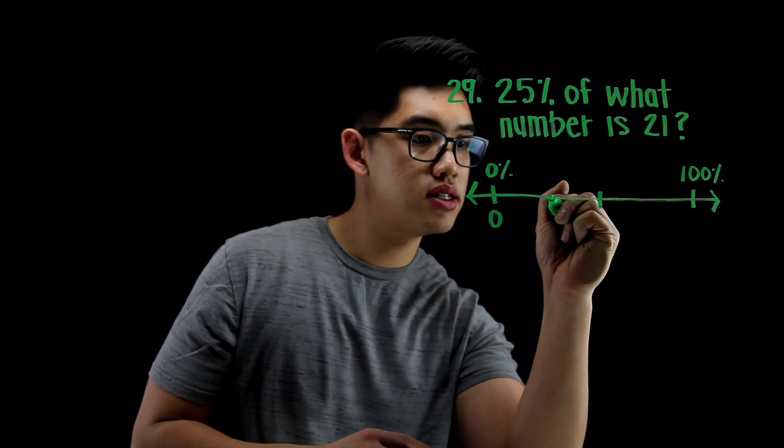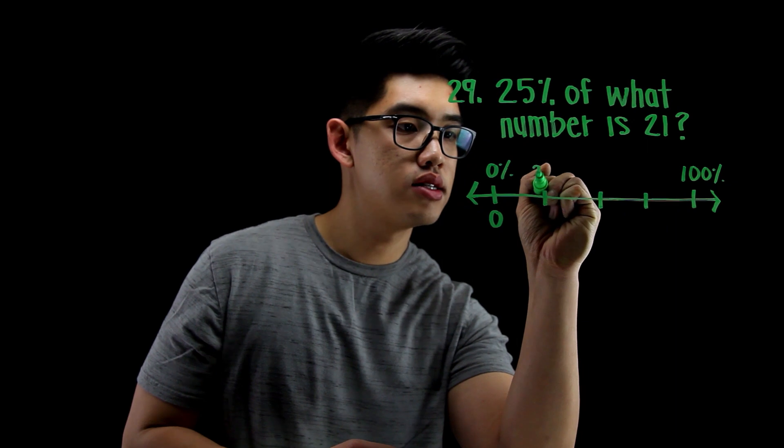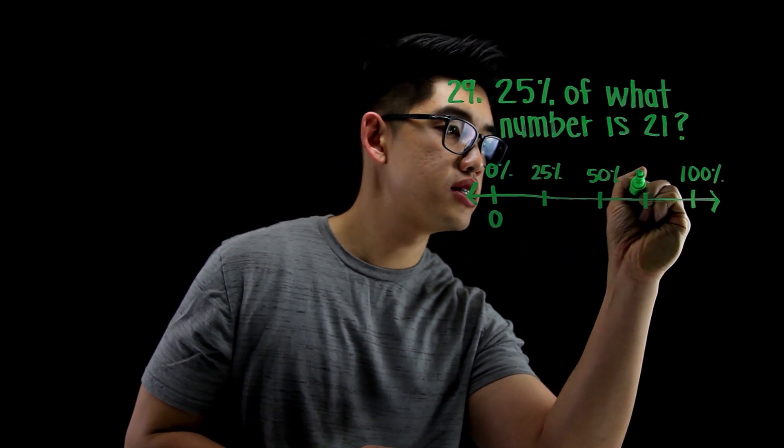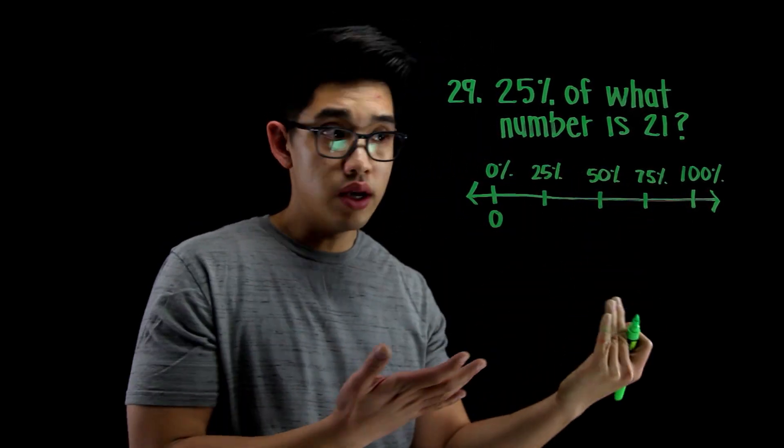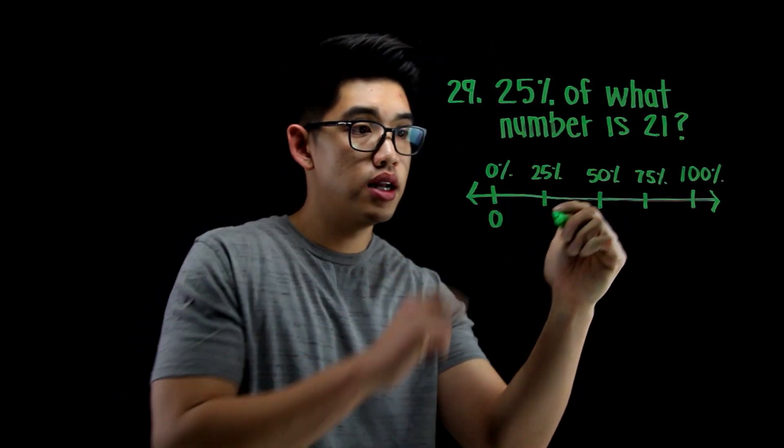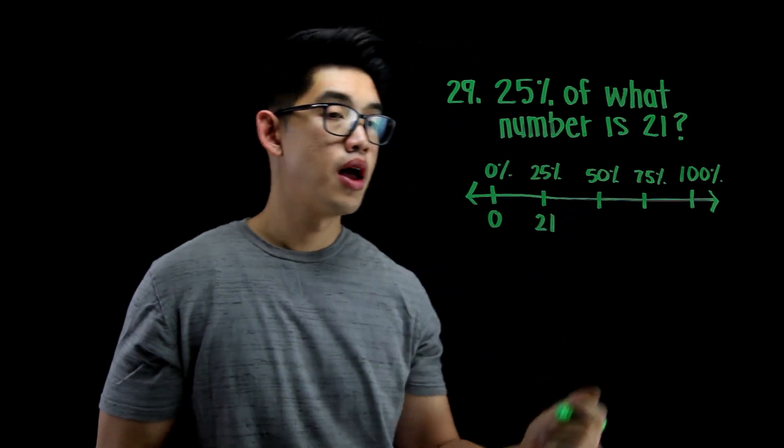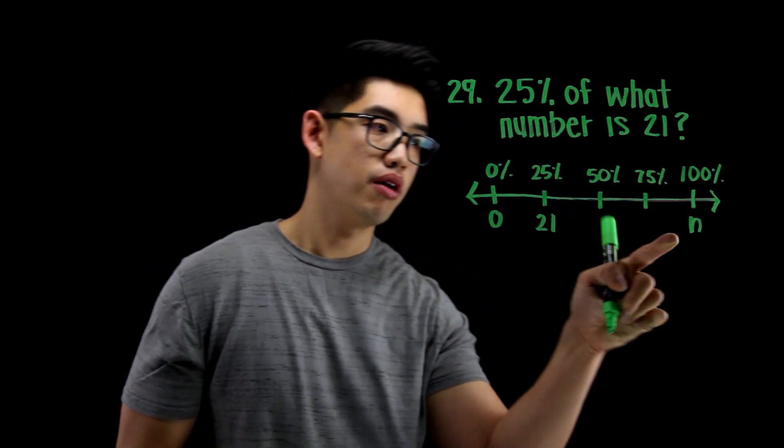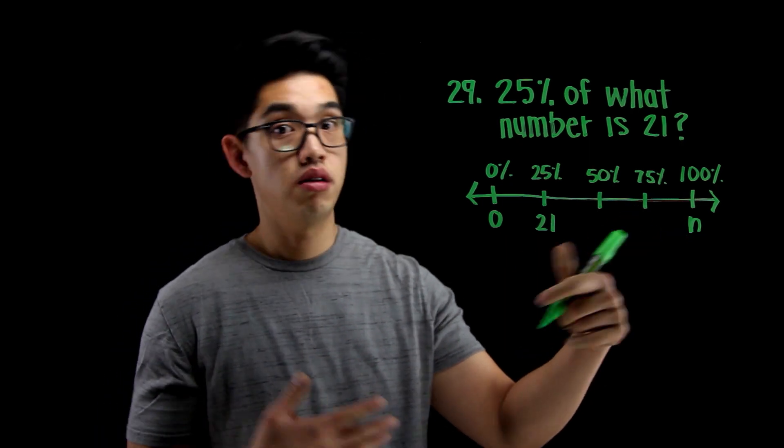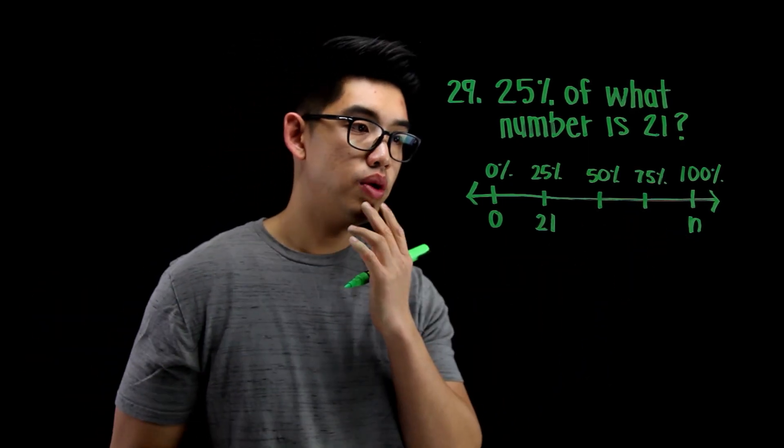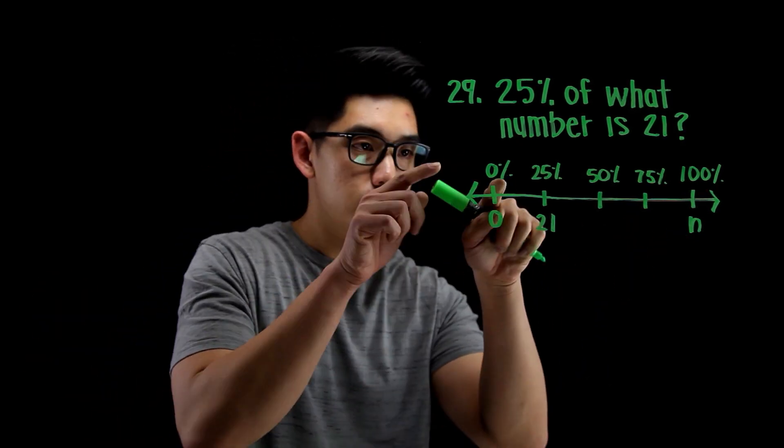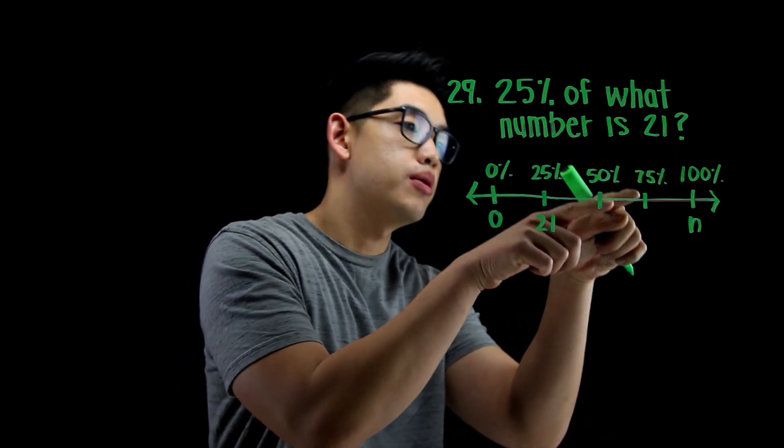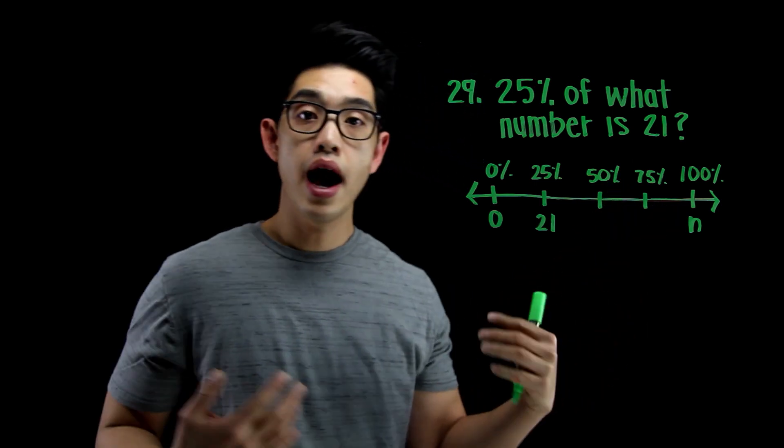My goal is to try to figure out what's this number right here? I don't know what that is. I want to write a variable, n. I don't know what it is. So let me see. Because 0 became 25%, and then that became 50%, and that became 75%, and that became 100%, I can do the same thing to the bottom too.